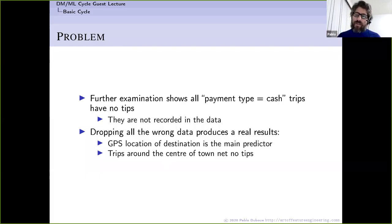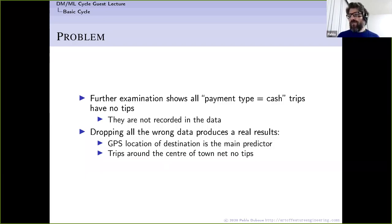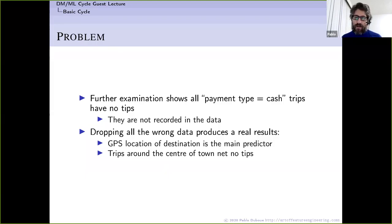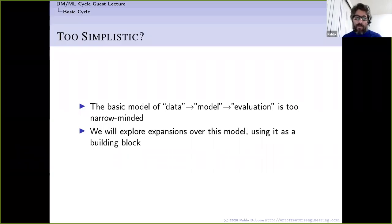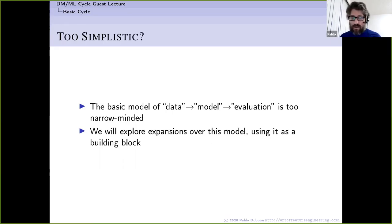The basic cycle is prone to these kinds of mistakes. You just take your data, run the model, get a number, and without any further analysis you may end up with the wrong model — either because your data is wrong or because the things you're evaluating are not correct. This example illustrates that the basic data-model-evaluation approach is too narrow-minded, and expansions over this model are needed.